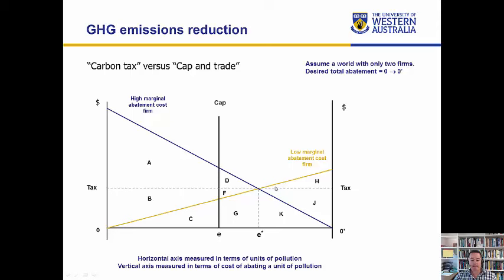That is the effect of a tax, and it is important to set the tax at the right level so that you actually generate the result of having pollution halved. If we set the tax higher, the level of pollution reduction would be even greater. If we set the tax lower than the existing level in this diagram, then we wouldn't have enough abatement. So the level of the tax does actually control the level of pollution abatement, and therefore the level of remaining pollution.